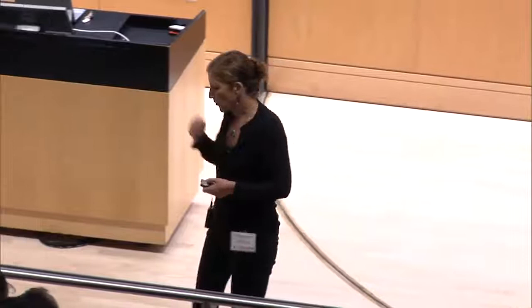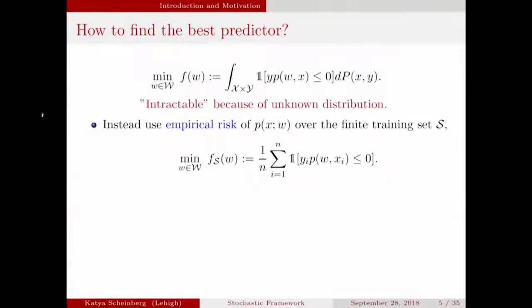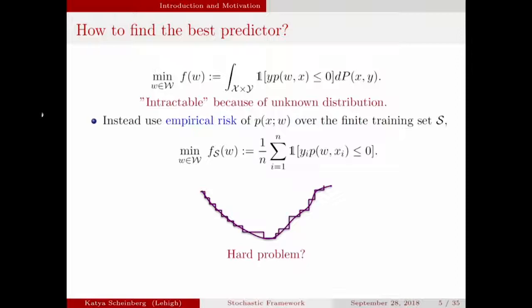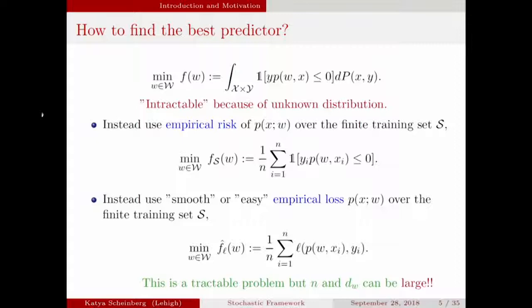Instead, we try to optimize some finite approximation of that. Moreover, the finite approximation is also a function that we typically don't know how to optimize because it has this weird stepwise shape, so derivatives are useless — it's not a nice smooth function. So we replace it with a nice smooth function by smoothing or by replacing it with a surrogate loss, and then we try to optimize that. For at least a couple of decades, optimizers have been hearing from the machine learning community that we don't want to solve these optimization problems exactly, because what we can optimize is not what we're really trying to optimize.